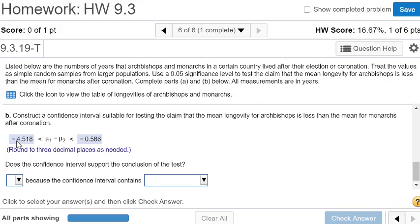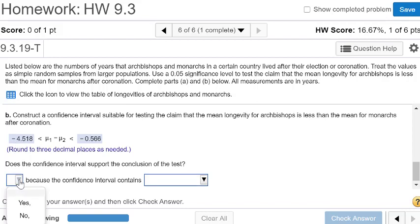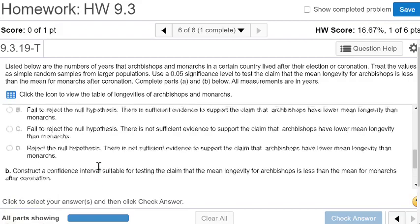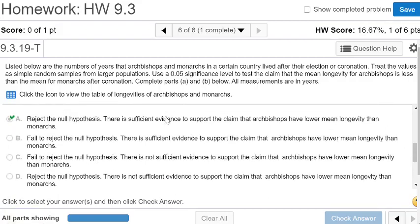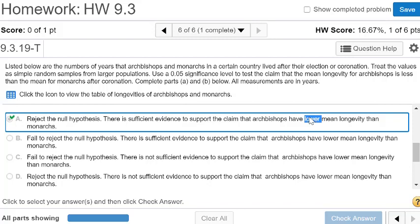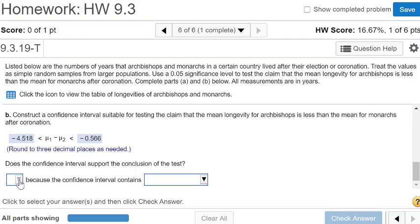And this thing does not include 0. They're both negative. So this is happening on the left-hand side. So this does support the conclusion of the hypothesis test. And the hypothesis test, we saw that it supported the claim that archbishops have a lower mean longevity. And so they're both negative. They're both lower. So in this case, it does support the conclusion of the test because the confidence interval does not contain 0.